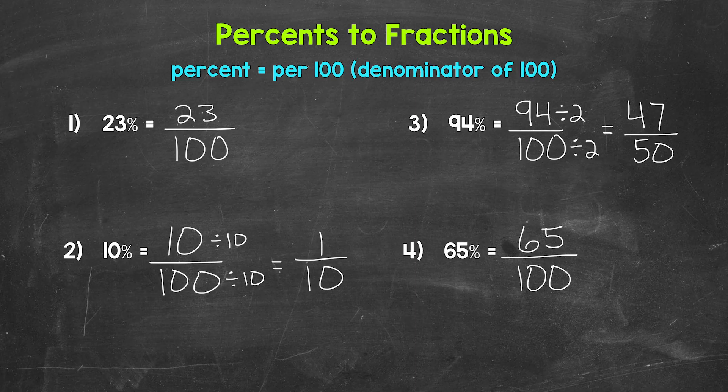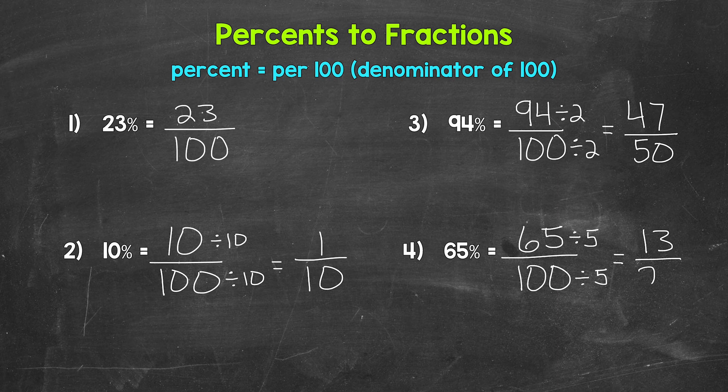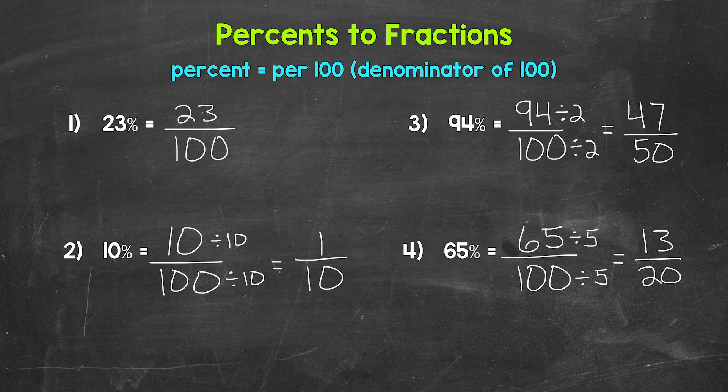We have a greatest common factor of five that we can divide 65 by for our numerator and 100 by for our denominator. 65 divided by five gives us 13, and 100 divided by five gives us 20. The only common factor between 13 and 20 is one. So we are in simplest form, 13 over 20, 13 twentieths.